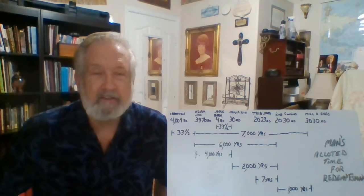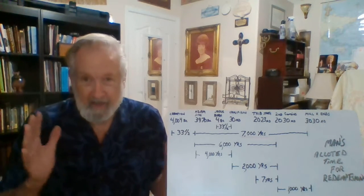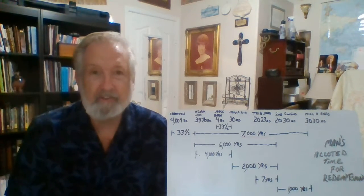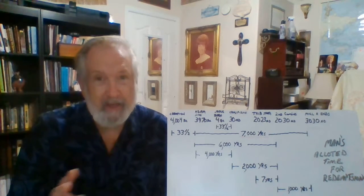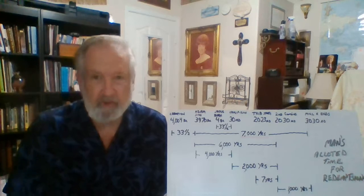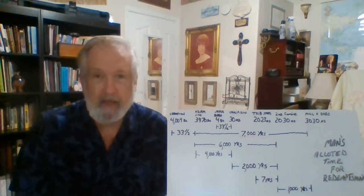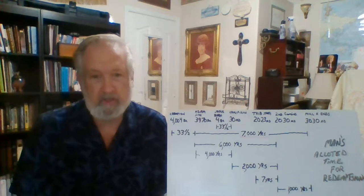So we find in Daniel chapter 9, verse 27, that this alliance is made, and then three and a half years into it, he breaks that alliance. So that's halfway through the tribulation. That's the midpoint. That's when the Great Tribulation takes place.